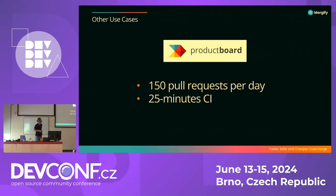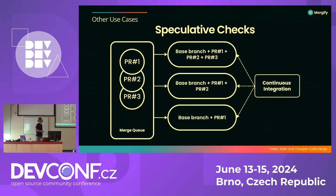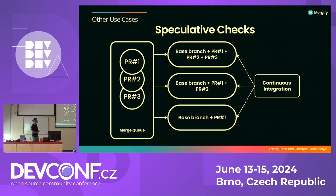Similarly, a product board had to merge around 150 pull requests per day with a 25-minute CI, so a basic merge queue also can't handle that. Today they use a combination of batches and speculative checks. The speculative check is the ability to check different combinations of pull requests at the same time — similar to what Uber implemented. For example, when you have three pull requests in the queue, the queue creates three temporary branches with three different combinations of the merge with the main branch. If the best combination works, all three pull requests can be merged. But if one or several combinations fail, the merge queue can identify the problematic pull request very fast and remove it from the queue automatically.